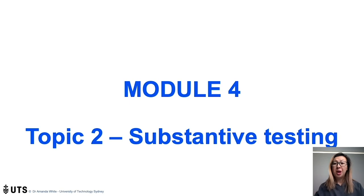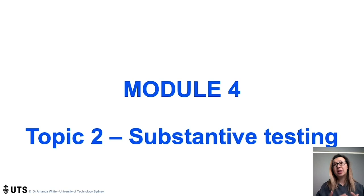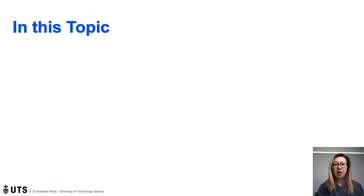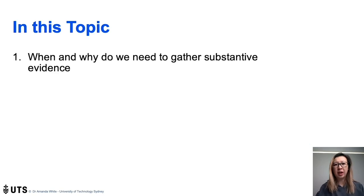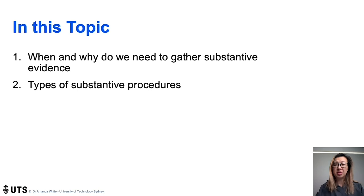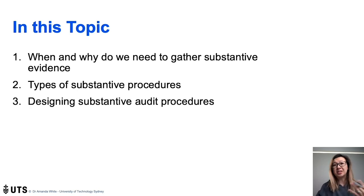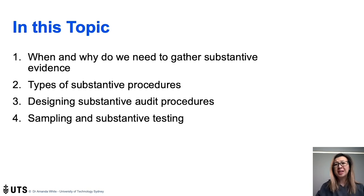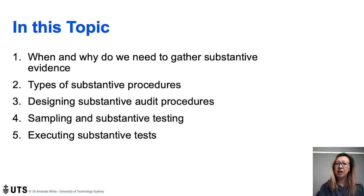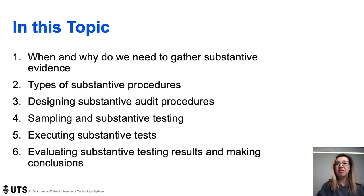Welcome to Module 4, Topic 2, which is going to be about substantive testing. In our previous module, we looked at testing internal controls. Now we're going to look at gathering substantive evidence, all to help us form an opinion about whether the financial statements are free from material misstatement. We'll cover when and why we need to gather substantive evidence, the types of substantive procedures, how we design those procedures remembering our four rules, sampling issues, executing tests, and evaluating results and making conclusions.